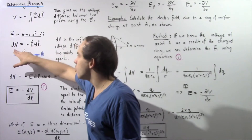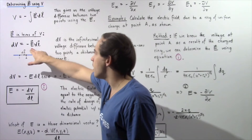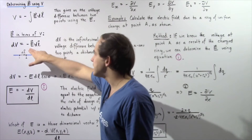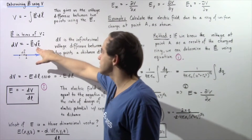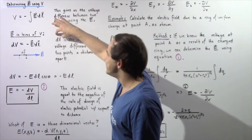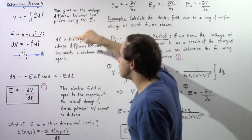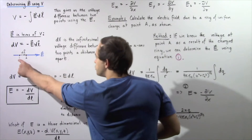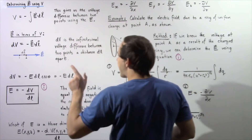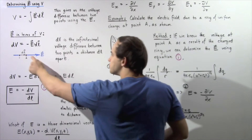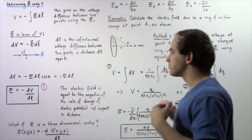Our infinitely small voltage difference is equal to the negative of the dot product of the electric field and our infinitely small distance given by dl. So dV is the infinitely small voltage difference between two points — let's call them points one and two — that are an infinitely small distance dl apart, as shown in the following diagram.